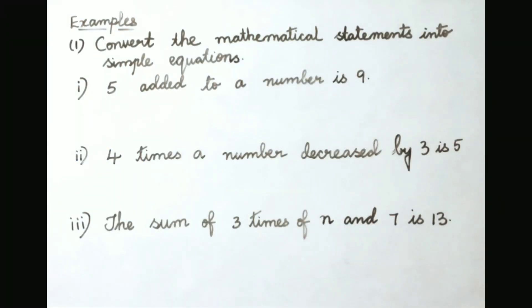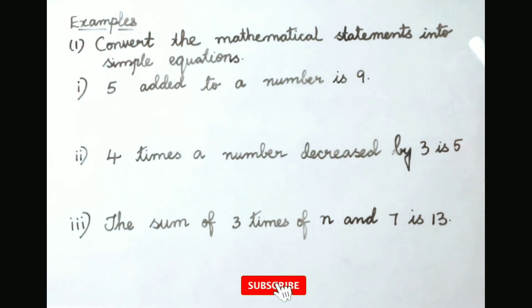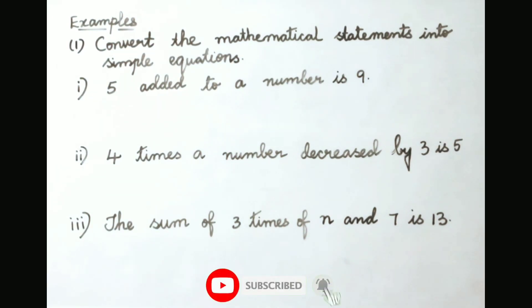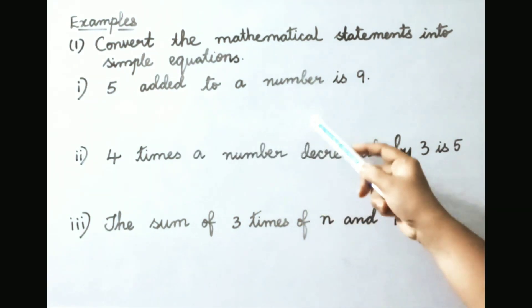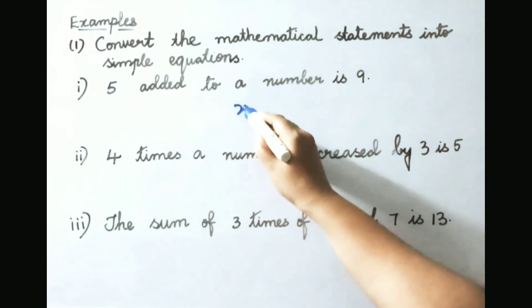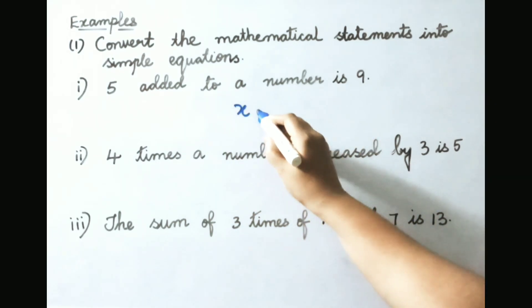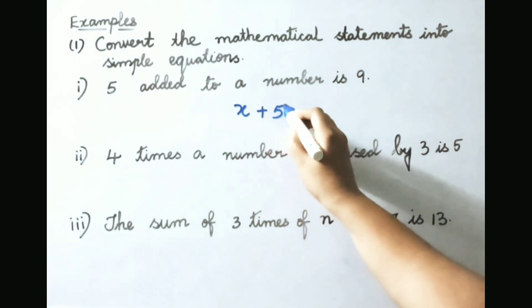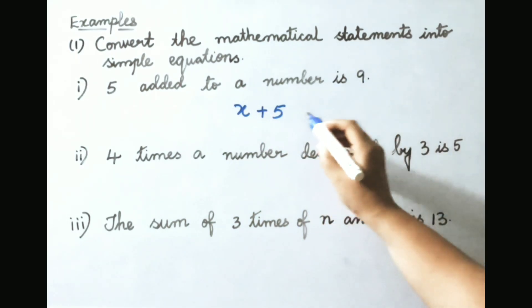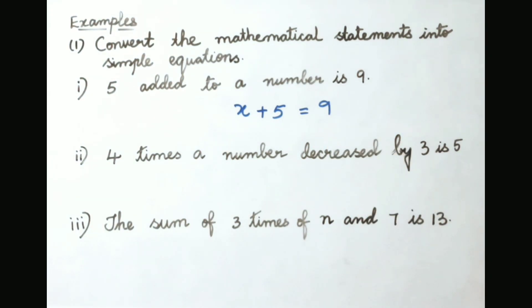Let us see examples. Convert the mathematical statements into simple equations. First: 5 added to a number is 9. Let the number be x. They said 5 is added to a number, so x plus 5 equals 9. The simple equation is x plus 5 equals to 9.